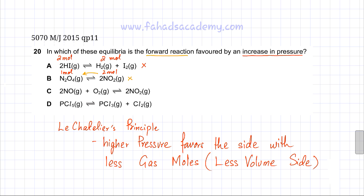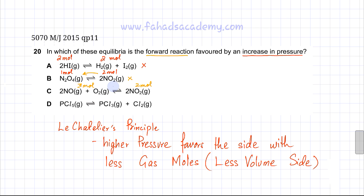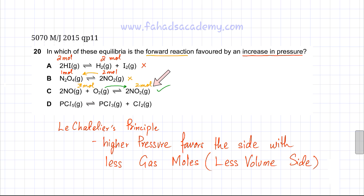Moving to option C, the reactants have 3 moles. If pressure is increased, the equilibrium would favor the side with fewer gas moles, which in this case is the forward direction. This is the correct answer because the question asks which equilibrium favors the forward reaction when pressure increases. Less gas moles on the products side means more products would be formed, so option C is the correct option.